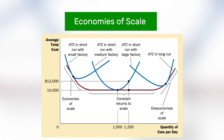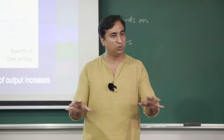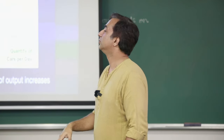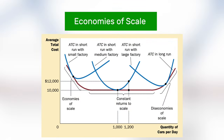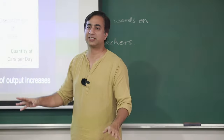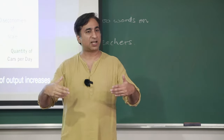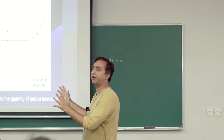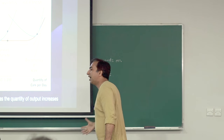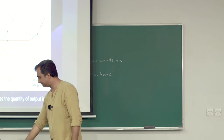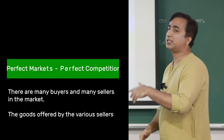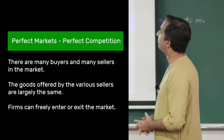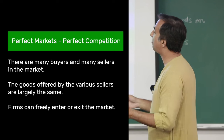Fixed costs are what a producer must pay regardless of output - land, capital, factory - even if producing zero. Variable costs increase as output increases: more labor, more raw materials. In the long run, as new technologies arrive and scales of production expand, the entire average cost curve shifts downward - economies of scale. The short-run average cost curve is just one point along the long-run average cost curve, which is downward sloping.